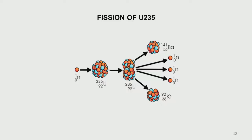To illustrate: a neutron hits a uranium-235 atom, which becomes uranium-236 — an unstable atom. It then splits into barium and krypton, and on average releases about 2 to 3 neutrons besides the fission products.